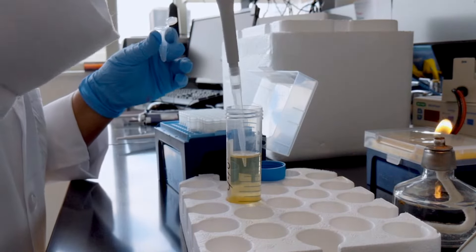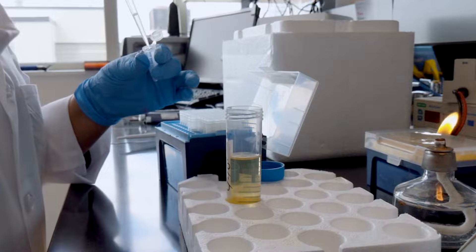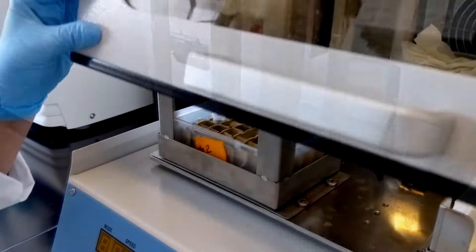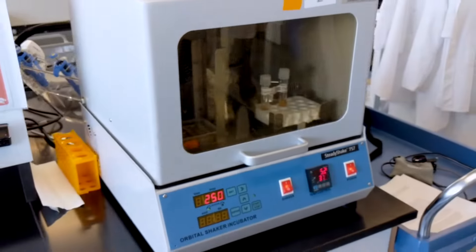To start the outgrowth step, first add 500 microliters of SOC to the tube containing the transformed bacterial cells. Next, place the tube in a shaking incubator at 37 degrees Celsius for 45 minutes.